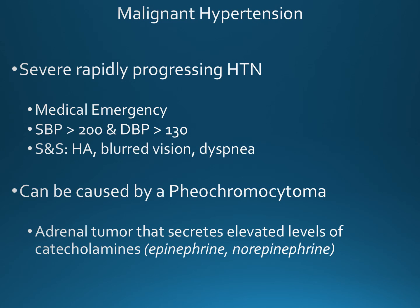Malignant hypertension is a severe, rapidly progressing hypertension, which is a medical emergency. Usually with a systolic blood pressure greater than 200 and a diastolic greater than 130, the patient usually experiences signs and symptoms of headache, blurred vision, and dyspnea.